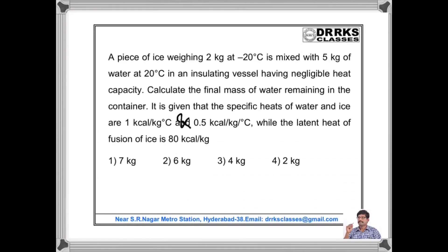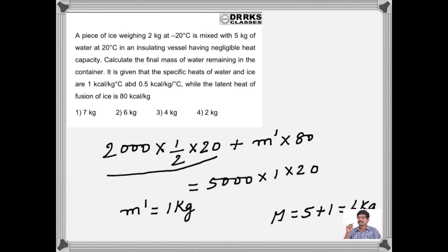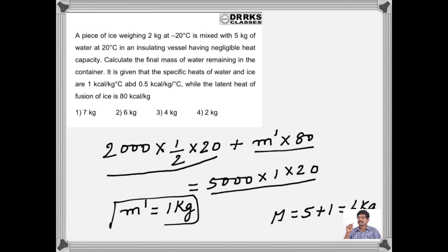Look at this problem where 2 kg of ice at −20°C is mixed with 5 kg of water at 20°C, and you have to calculate the final mass of water remaining in the container. The specific heat of ice, specific heat of water, and latent heat of fusion of ice are given. The heat gained by ice during the rise in temperature involves 2000 grams with a specific heat of 0.5 cal/g, over a rise of 20°C. Solving, the amount of ice melted M' = 1 kg. So the total water is 5 + 1 = 6 kg.